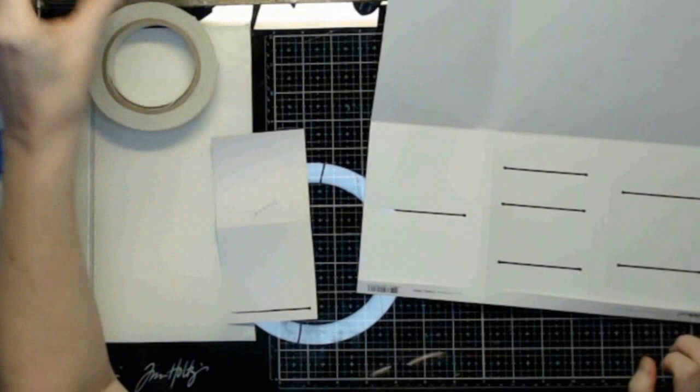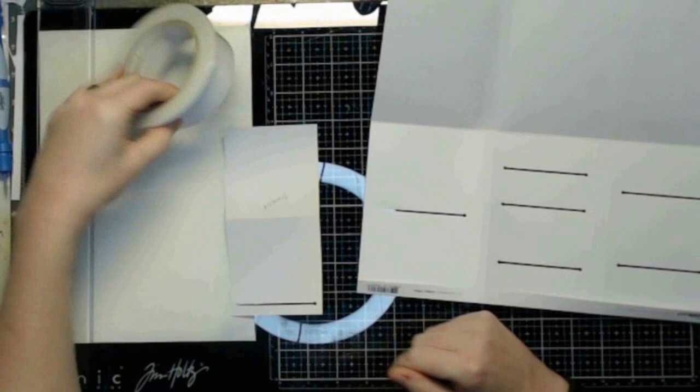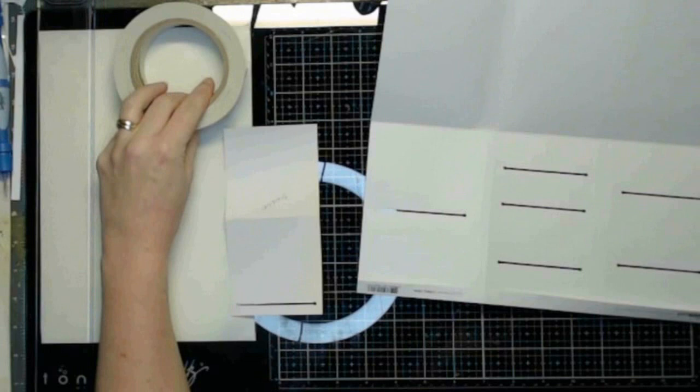You can use whatever adhesives you have and are comfortable with. Double sided tapes, scotch tape glider, art glitter glue, tacky glues, PVA glues, anything that's appropriate for paper to paper adhesion.